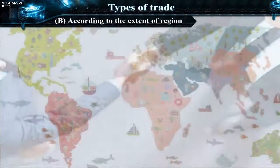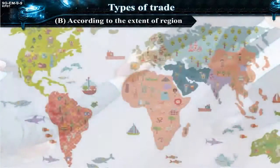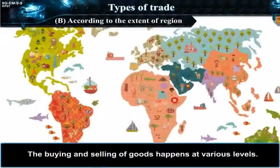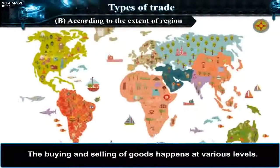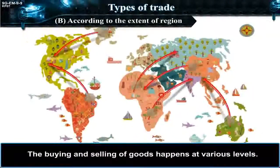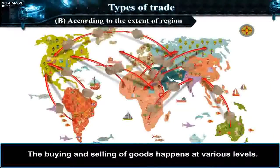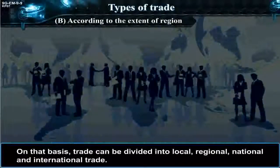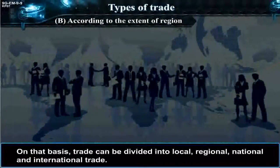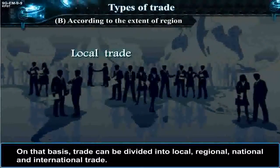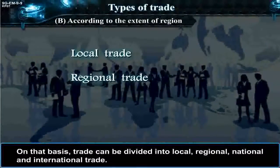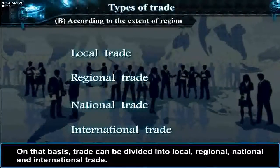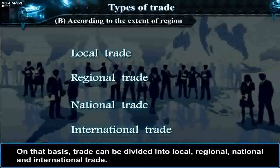According to the extent of region, the buying and selling of goods happens at various levels. On that basis, trade can be divided into local, regional, national and international trade.